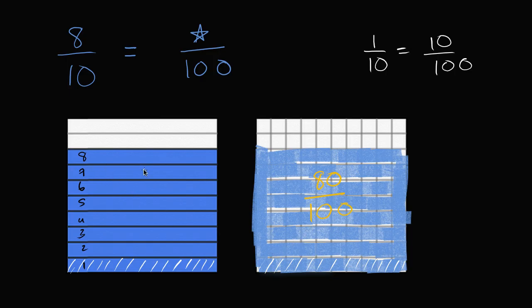while over here, I filled in eight out of my ten equal rectangles. But they're the same amount of area, they're the same fraction of the whole. So eight over ten is going to be the same thing as eighty over one hundred.